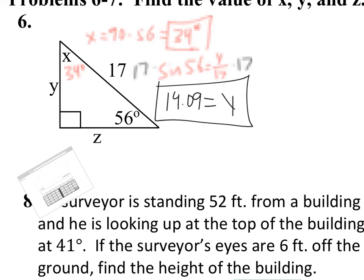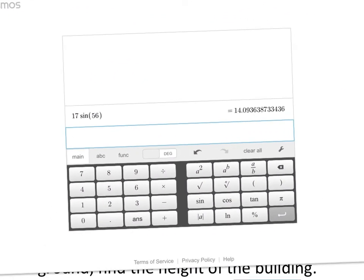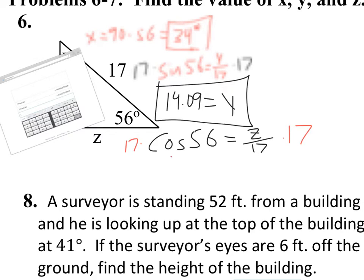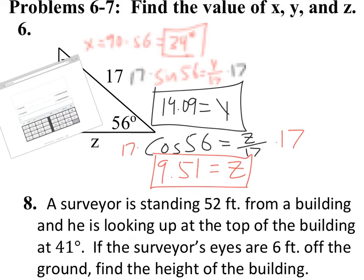For Z, cosine of 56 equals adjacent over hypotenuse. Multiplying both sides by 17 gives us 17 times cosine of 56, which equals 9.51 when rounded properly. So Z equals 9.51.